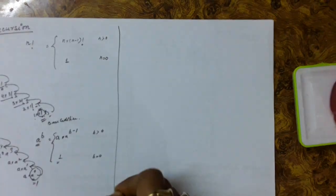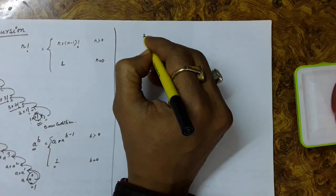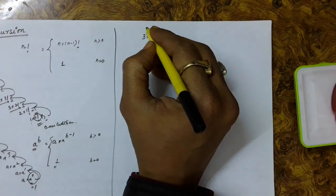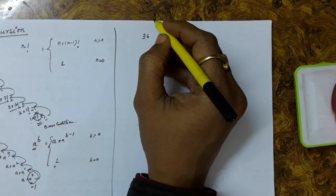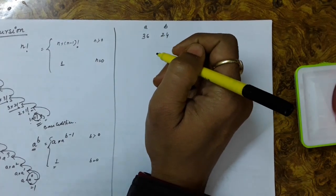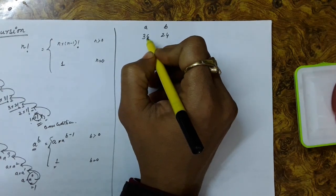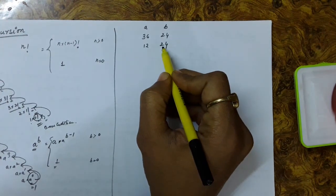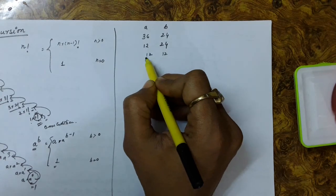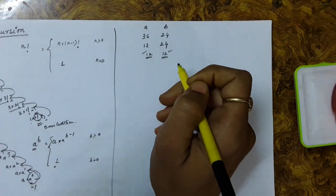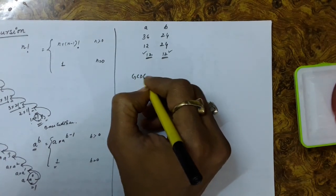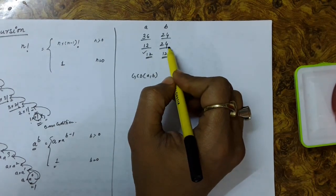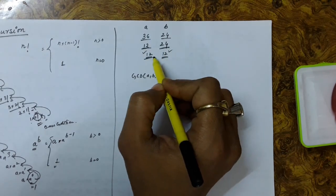Another example: suppose you have two values, 36 and 24, and you want to find their GCD (greatest common divisor, known in Hindi as Mahatam Samapvartank). Let a = 36 and b = 24. You subtract the smaller term from the bigger one: 36 - 24 = 12. You again subtract the smaller from the bigger: 24 - 12 = 12. Now the two values are equal, so either of them is the GCD. Finding GCD(36, 24) is the same as finding GCD(12, 24), which is the same as GCD(12, 12).